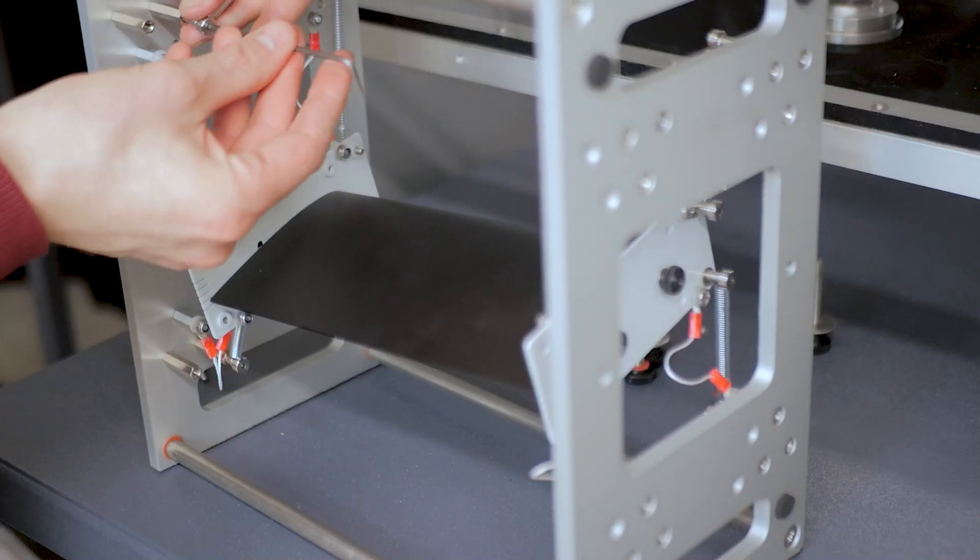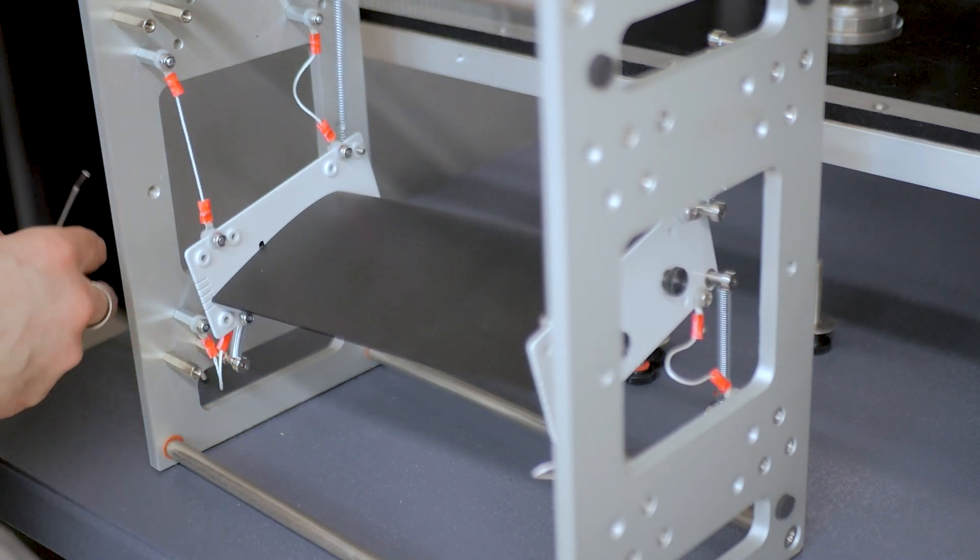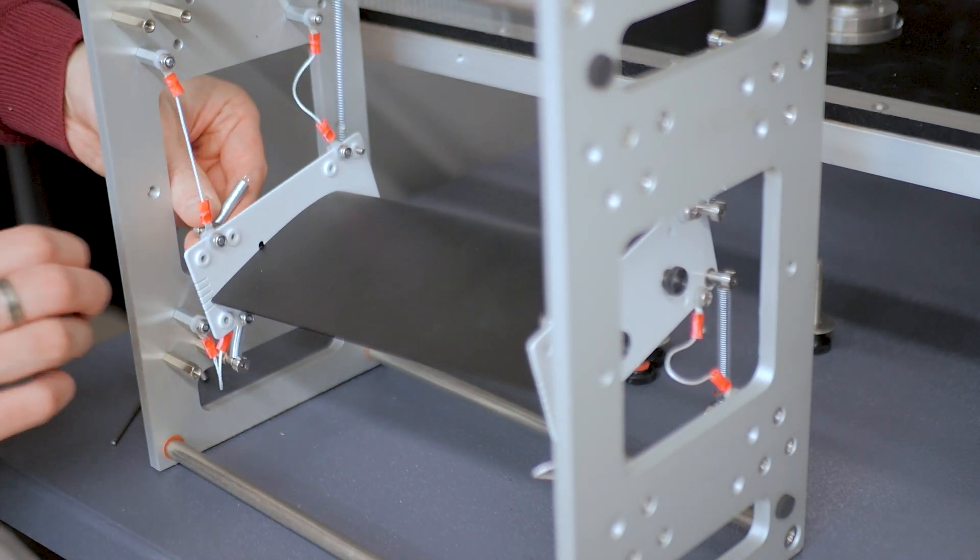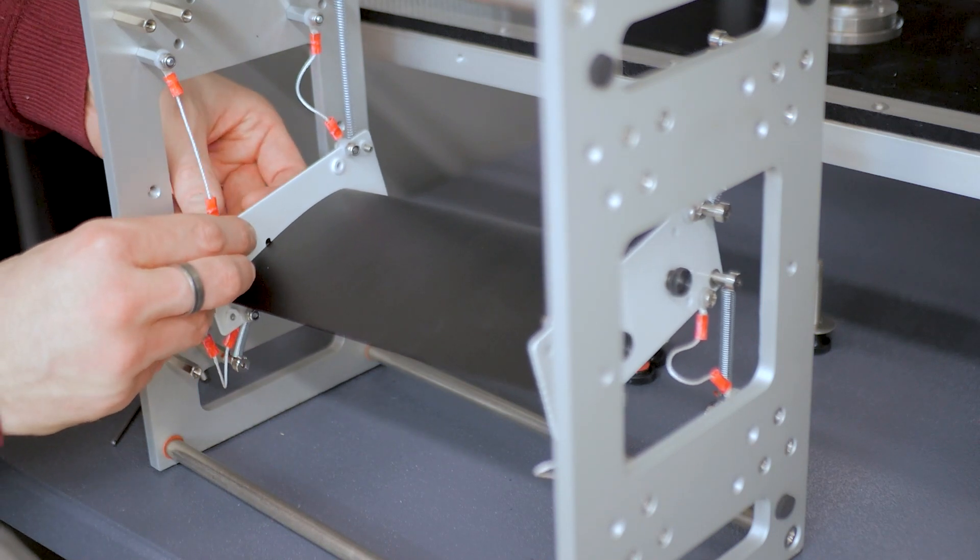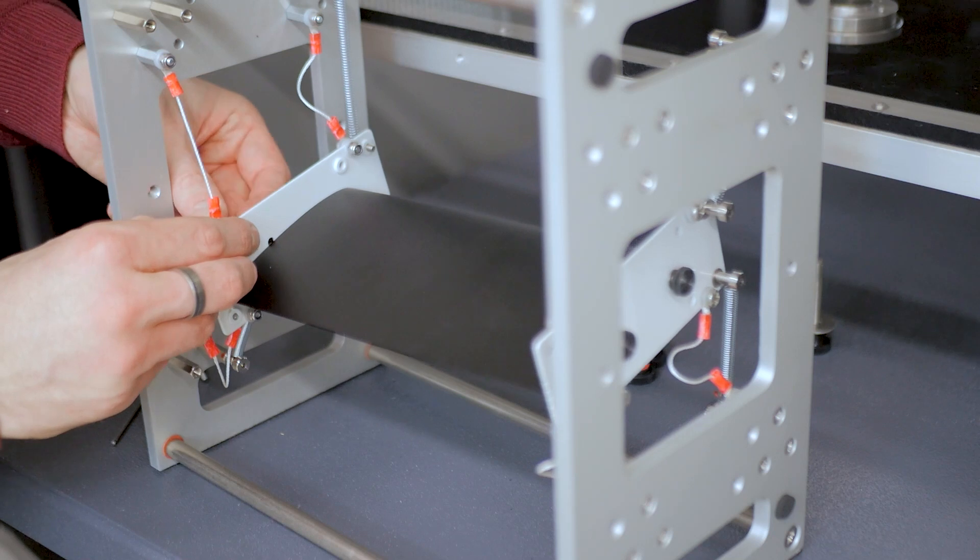At both ends of the aerofoil are mounting plates that allow you to increase the angle of attack. The string tethers here are in place to limit amplitude during extreme oscillations to protect the aerofoil from damage.